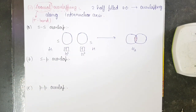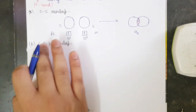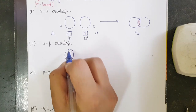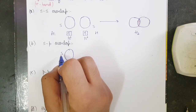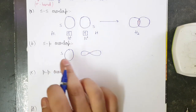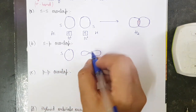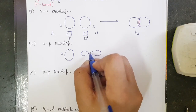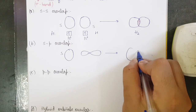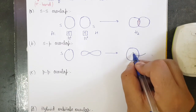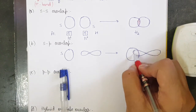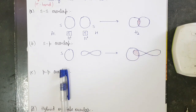Next is SP overlap. As the name clearly makes you understand, I have one S orbital and I have one P orbital. I take one S orbital and one P orbital — this is the node. When I combine them, I get the formation of a common overlapping region.